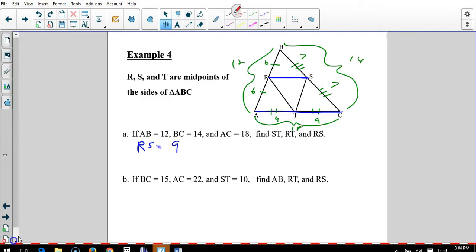Find all the mid-segments. Well, RS is parallel to AC. Which means RS is half of AC. So, since AC is 18, RS is 9. Now, let's look at ST. ST is parallel to AB. Since AB is 12, that makes ST 6. And then RT is parallel to BC. Since BC is 14, RT is 7.